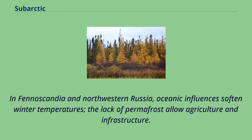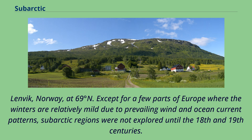In Fennoscandia and northwestern Russia, oceanic influences soften winter temperatures, and a lack of permafrost allows agriculture and infrastructure, as seen for example in Lenvik, Norway, at 69 degrees north.